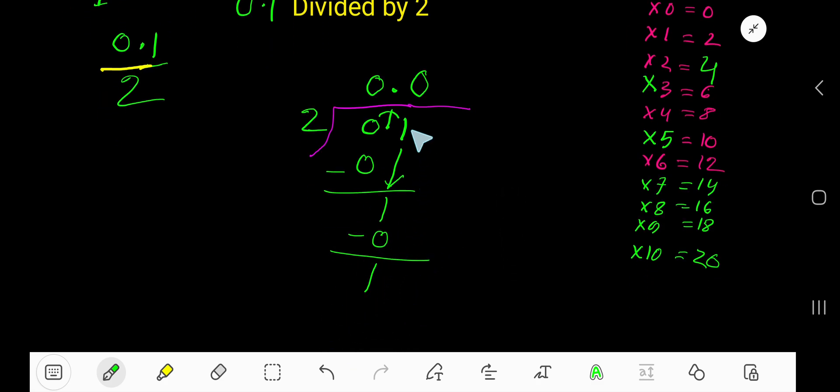To continue this process, look - this is a decimal number 0.1, so you can take any number of zeros according to your need. Bring down this 0. Now you have 10. 2 goes into 10 how many times?